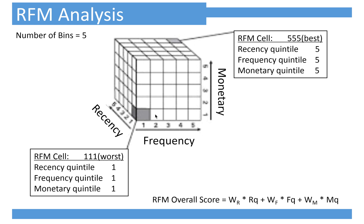We can also separate recency, frequency, and monetary into five bins. Now let's first see the top RFM cell, which is 5-5-5. It means that in recency, frequency, and monetary, this is the top customer.